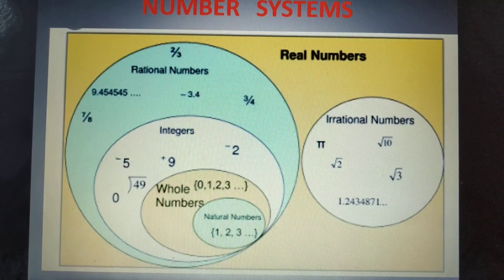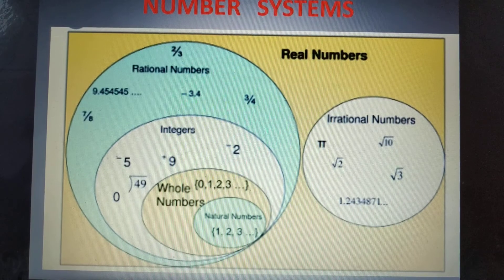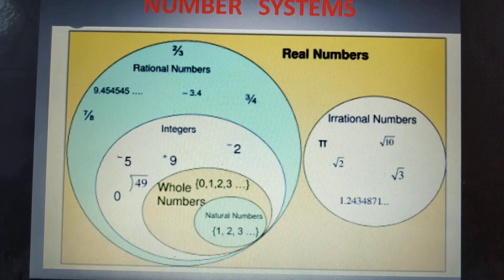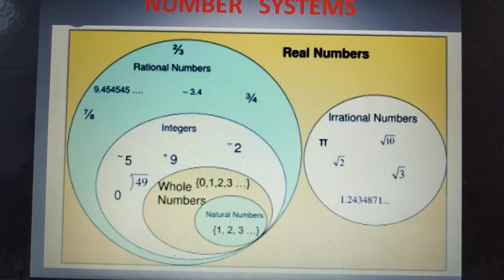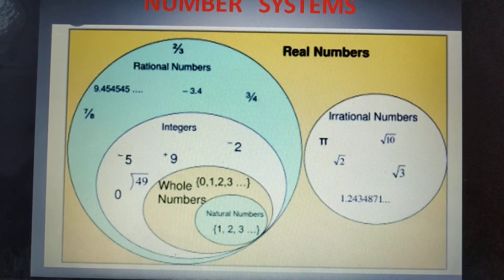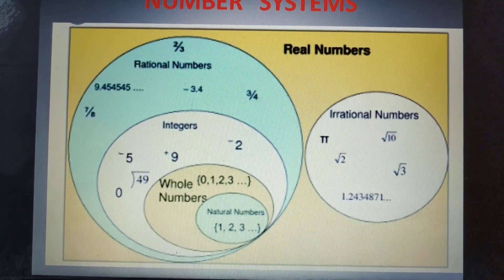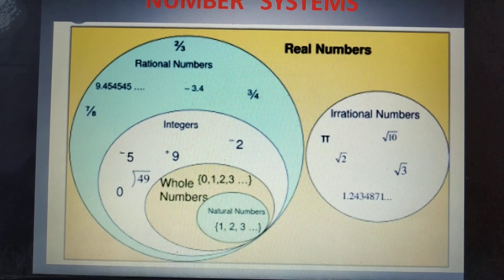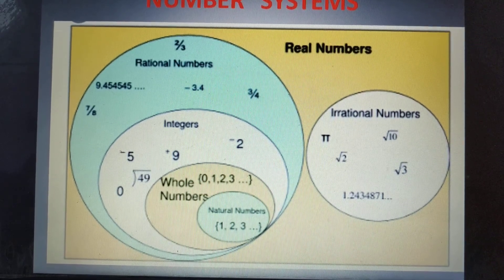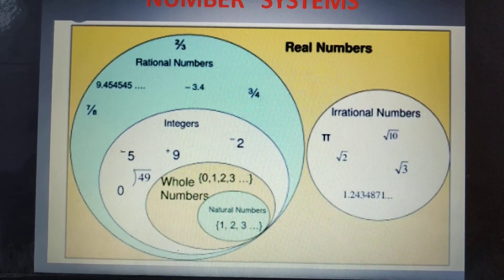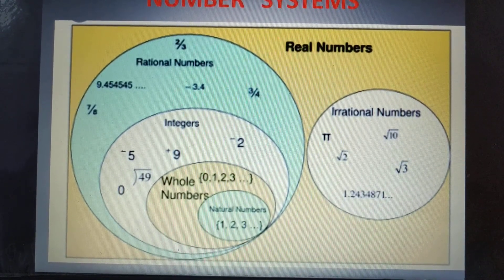The set of natural numbers, as I said, are the counting numbers 1, 2, 3. Once you include 0, that forms 0, 1, 2, 3, etc. — that forms the set of whole numbers.